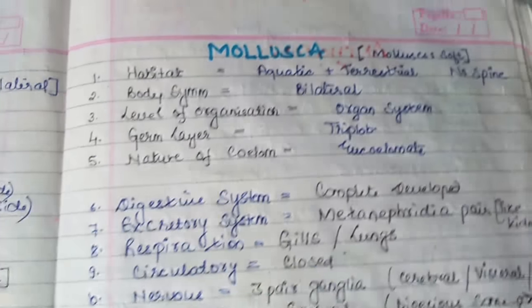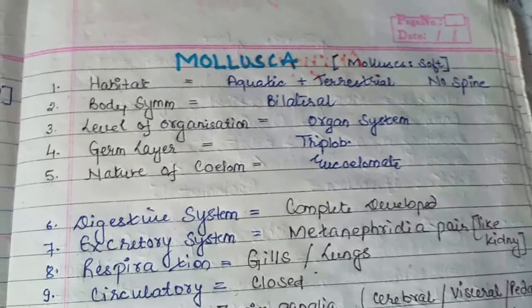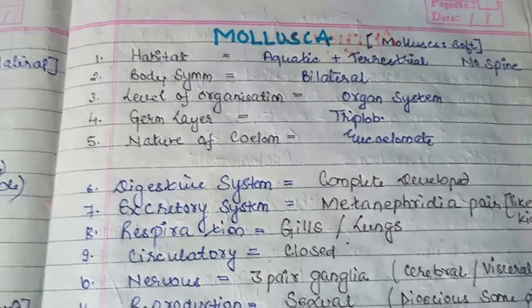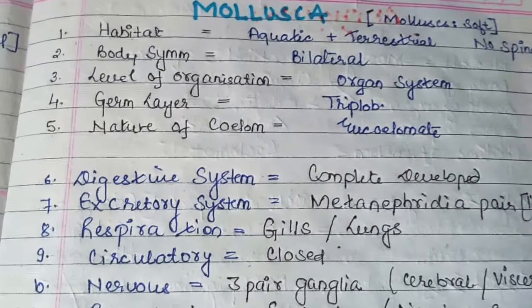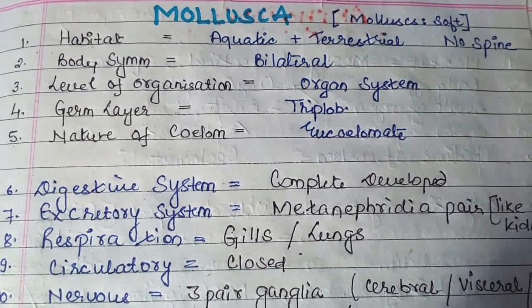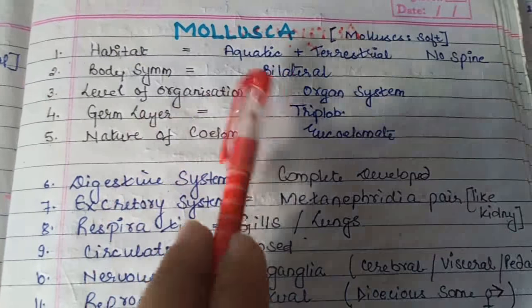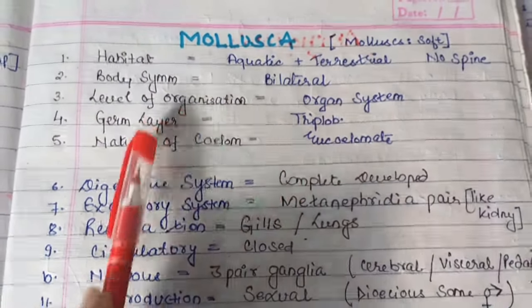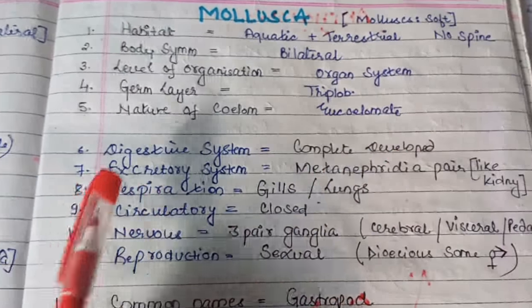Next phylum is phylum Mollusca. 'Mollusca' means soft body. Their body has no bones and no spines — the body is made of soft tissue. Regarding habitat, Molluscan organisms are generally aquatic and terrestrial in living. Body symmetry: bilateral symmetry. Level of organization: organ system. Germ layer: triploblastic. Nature of coelom: eucoelomate or true coelom.